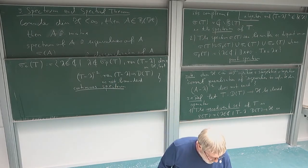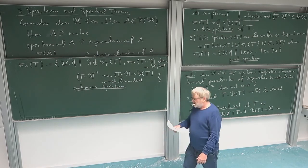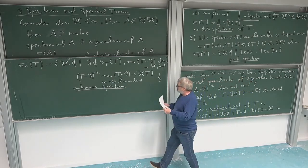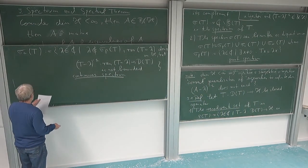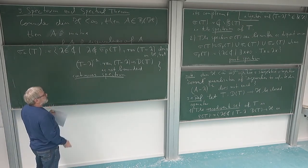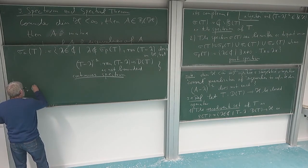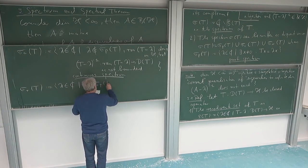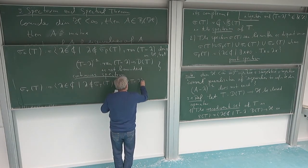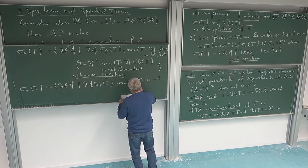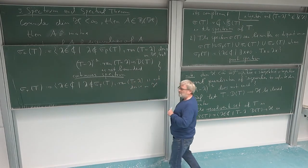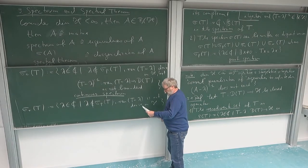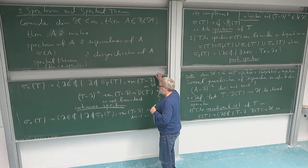And then of course there is the rest, where the problem is really with surjectivity — the range can be much too small. If the range is not even dense in the Hilbert space, then clearly we don't have an inverse in any sense. That's what is called the residual spectrum: the lambdas which are not in the point spectrum and where the range of T minus lambda is not even dense in H. So that's where we really have a serious problem with surjectivity. Those are the three possibilities for the spectrum.